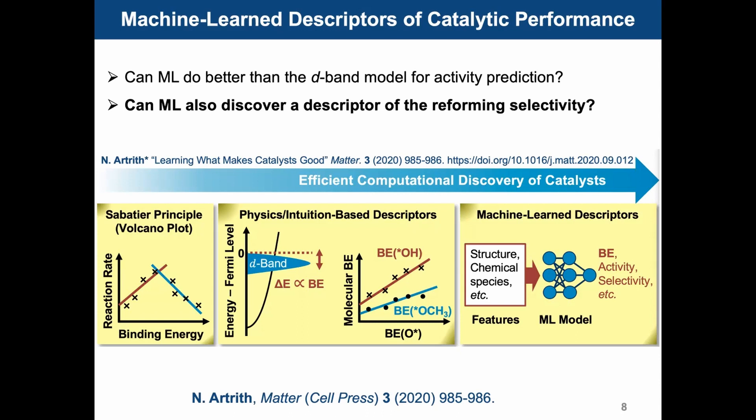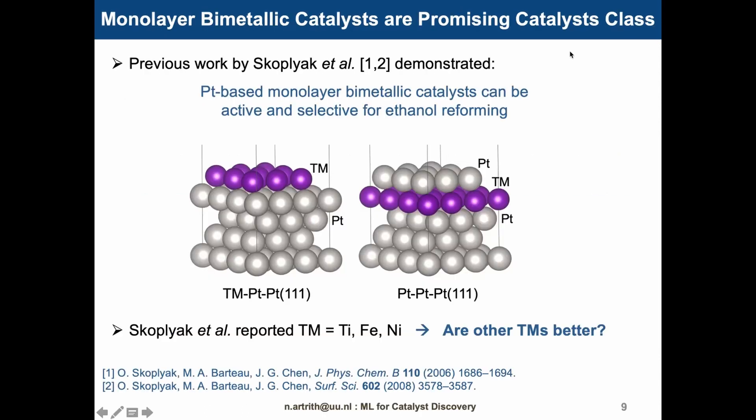The question is now: can we develop a machine-learned descriptor for the reforming activities and selectivity? First, we need to find out if enough data is available to construct a machine learning model. In 2006 and 2008, the Chen Group at Columbia University demonstrated that platinum-based monolayer bimetallic catalysts are promising for ethanol reforming.